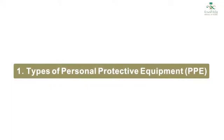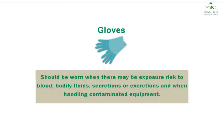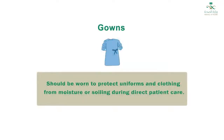Types of Personal Protective Equipment, or PPE. Gloves should be worn when there may be exposure to blood, bodily fluids, secretions, or excretions, and when handling contaminated equipment. Aprons and gowns should be worn to protect uniforms and clothing from moisture or soiling during direct patient care.